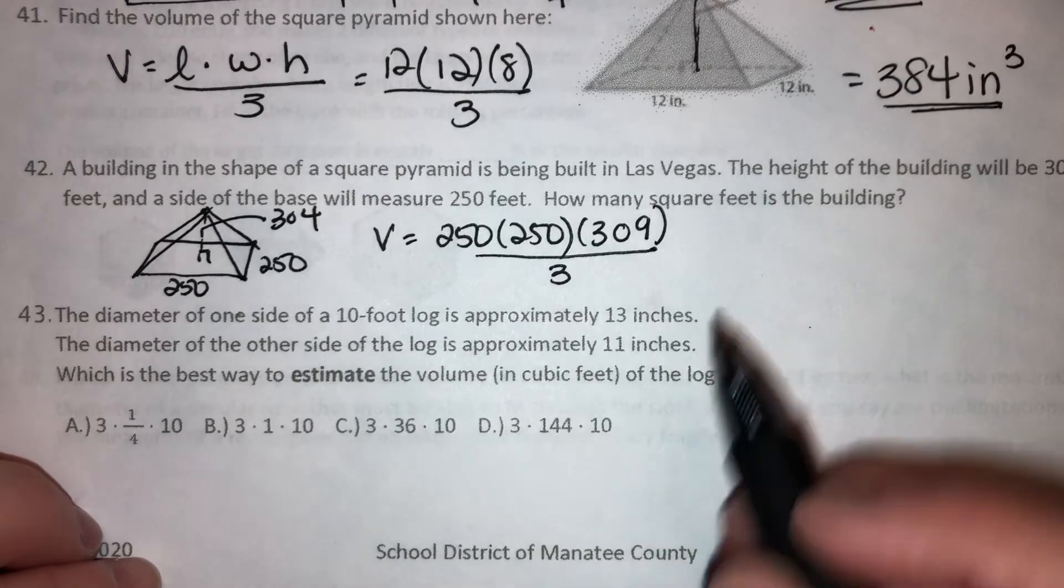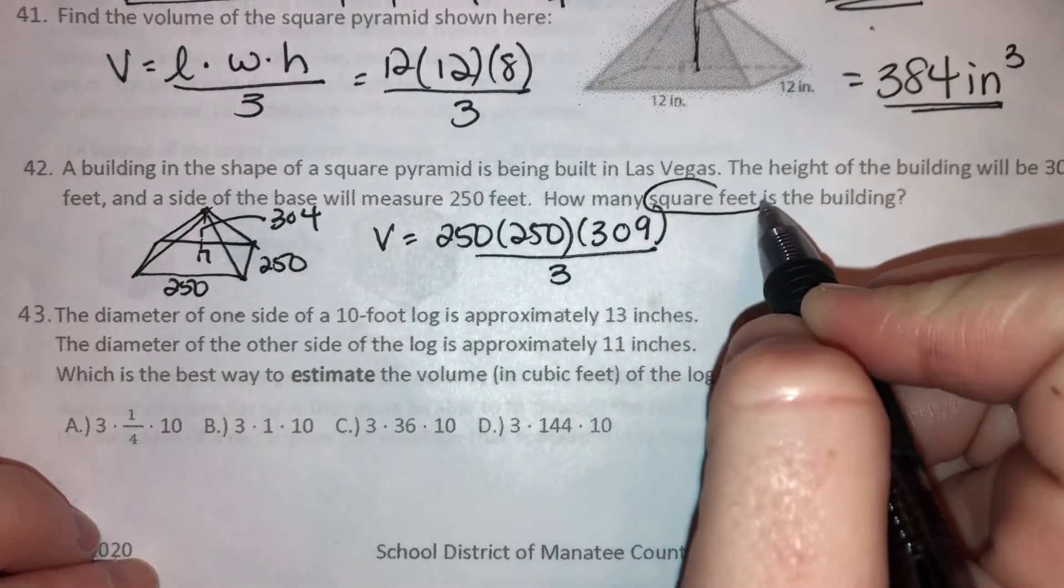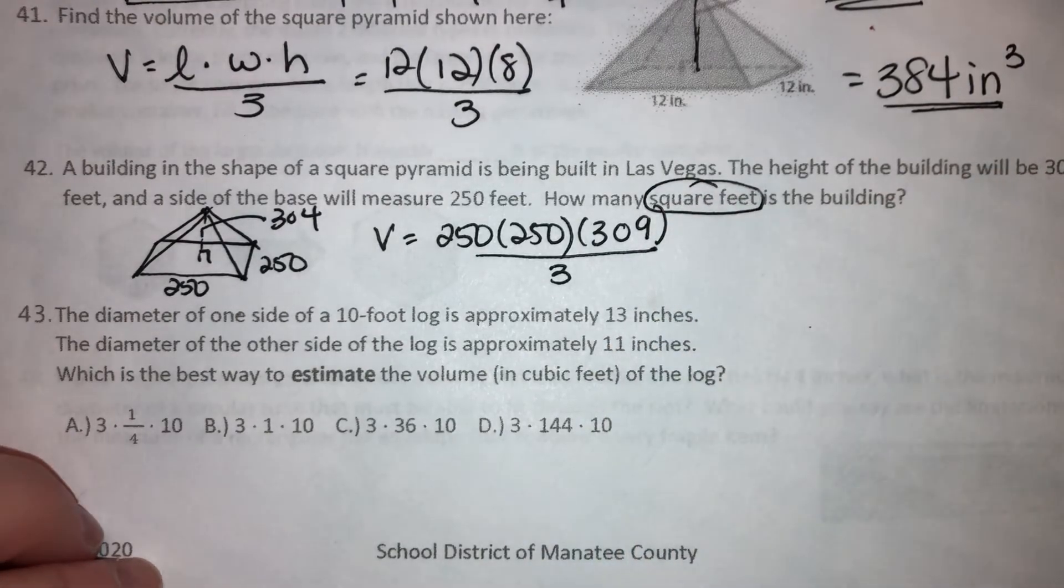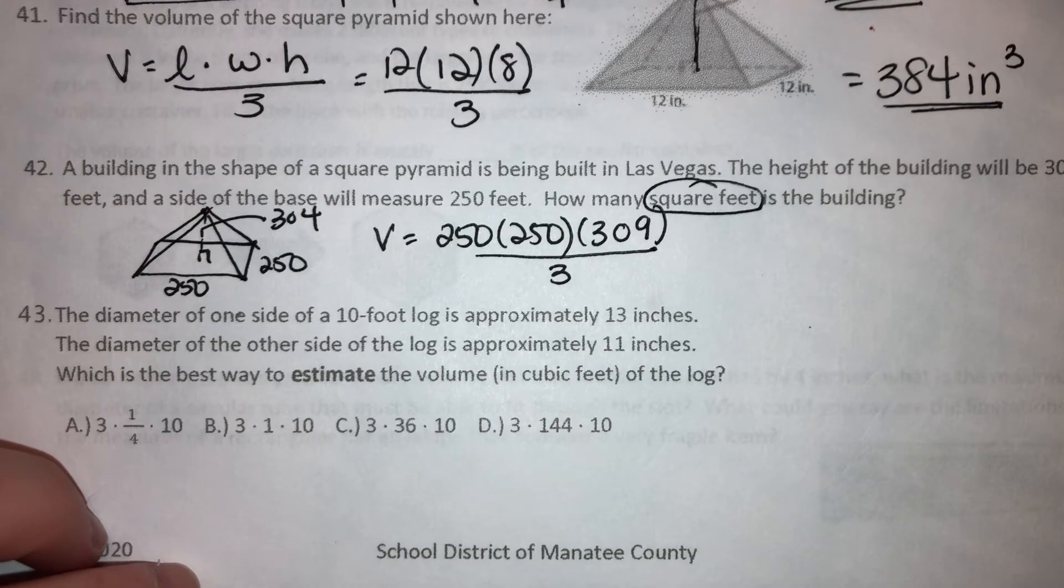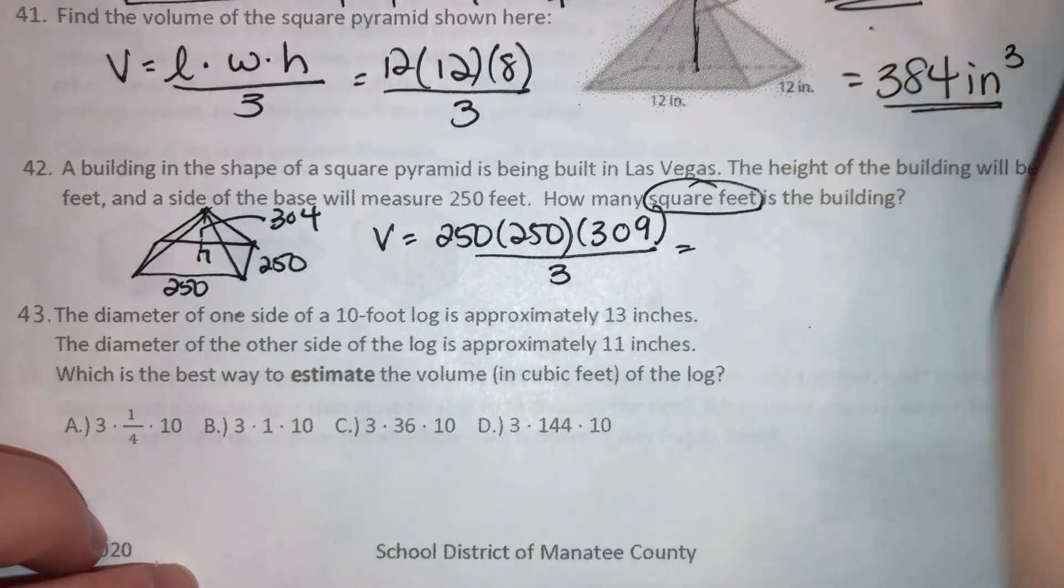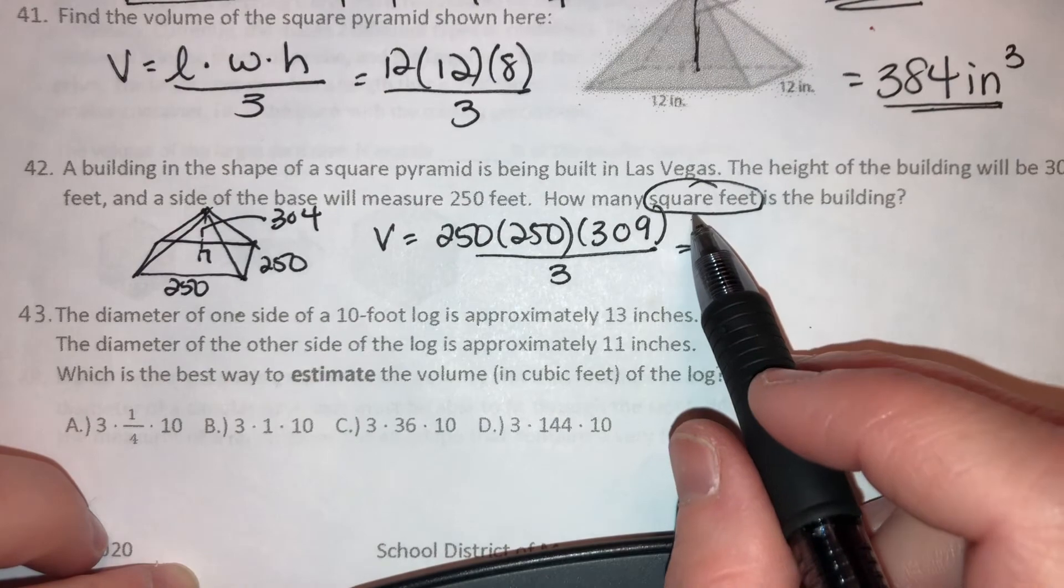Okay, so same thing. We're going to do volume equals length times width times height. Length and the width is 250. Height is 309, all divided by 3. That's all in feet. And it says how many square feet is the building? How many square feet? A building in the shape of a square pyramid is the most height and size. The base will measure 250. How many square feet is the building? Is it looking for volume?